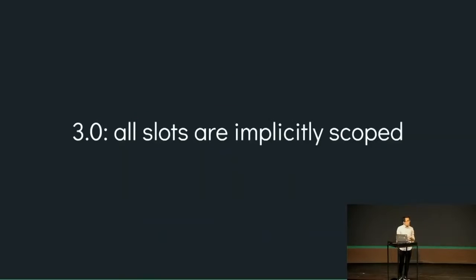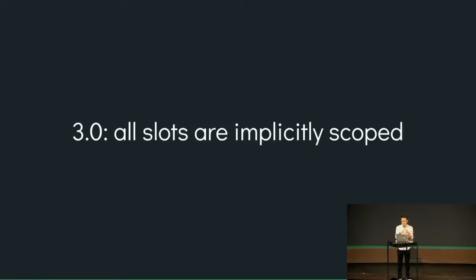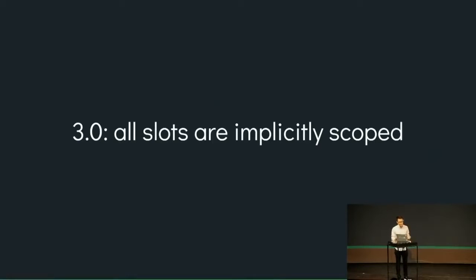Our goal in 3.0 is to make all slots implicitly scoped. This is also why we're unifying the two types of slots under the same syntax with the new slot syntax. Whenever you use the new slot syntax, all slots are internally compiled as scoped slots. So if you're already using 2.6 with the new slot syntax, you're already getting the performance improvements. In 3.0 we're completely removing the conceptual difference — it's all just slots, they're all functions, and they all get the same performance benefits.